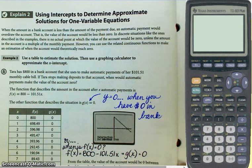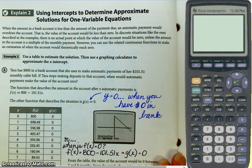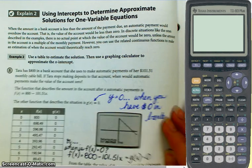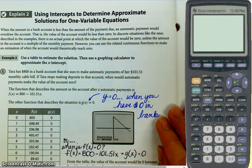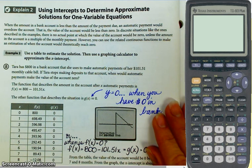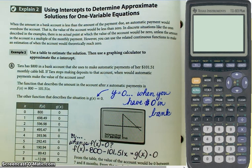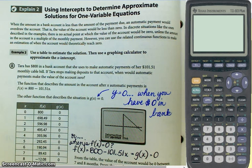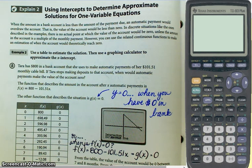Alright, I'm looking at page 330 right now where it says using intercepts to determine approximate solutions for one variable equations. So there are going to be several of these like in the homework.